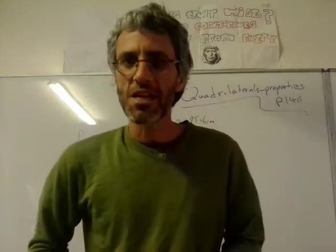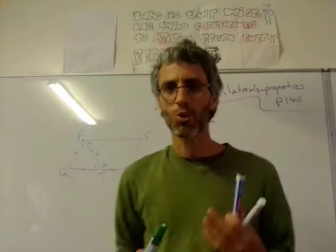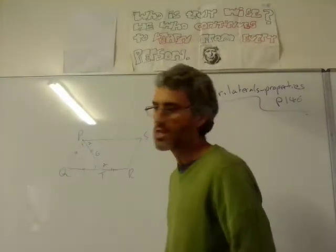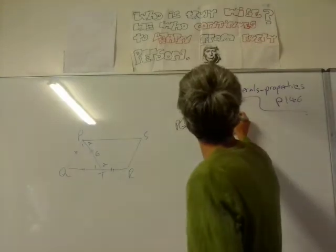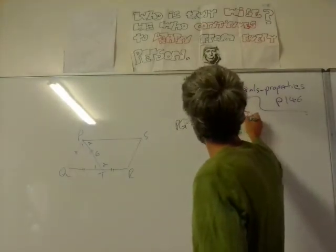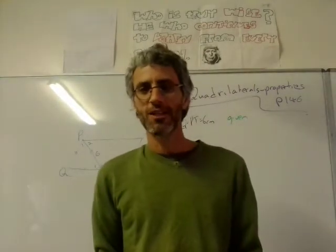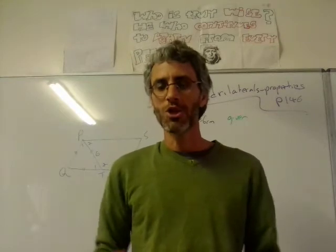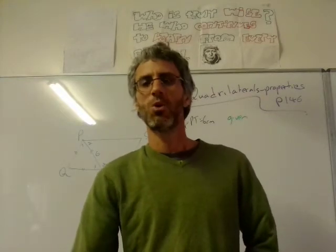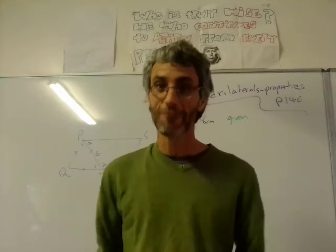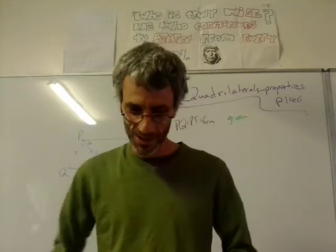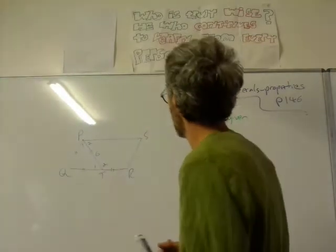Even if they told us they're equal, we need to write that as a proof. How do I know that PQ is 6 centimeters? Because it's given. If you're told something in the question and you want to use it, you say it's equal to 6 centimeters because it's given. You have to write 'given'—if you don't write given, you're not going to get the mark.